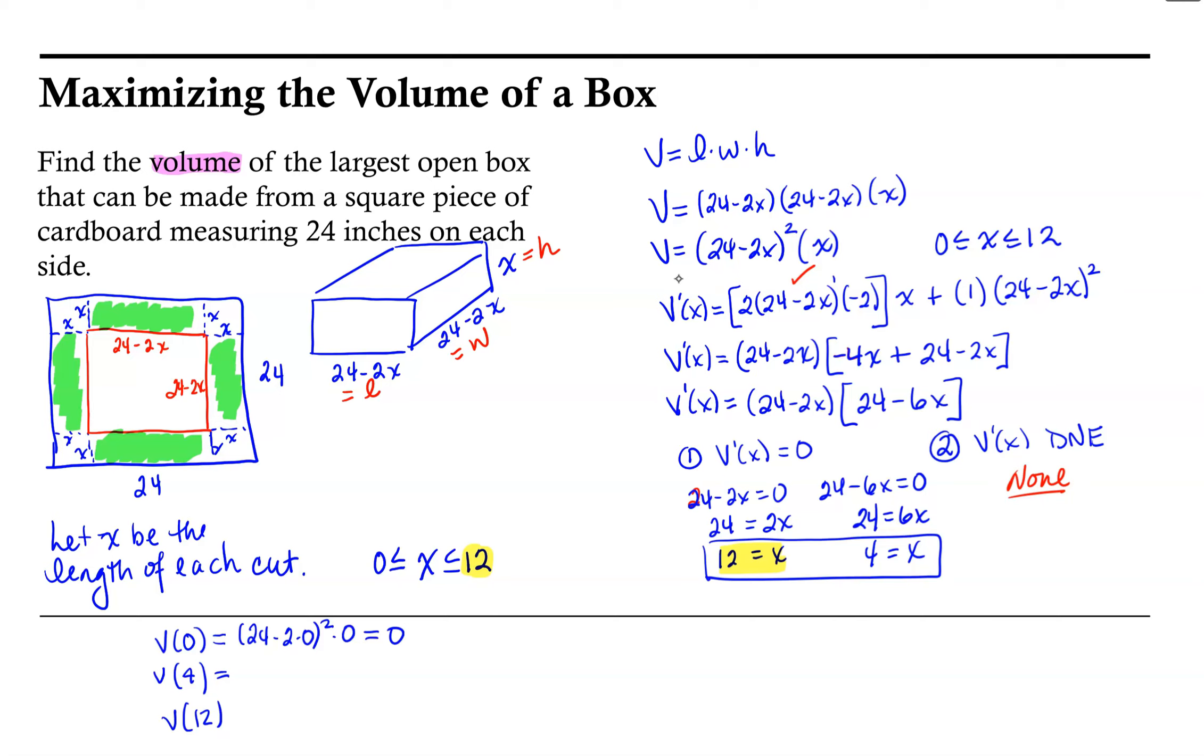Now our critical point when x is equal to 4, we would have 24 minus 2 times 4 squared times 4 as our volume. So inside the parentheses we would have 24 minus 8, which is 16. 16 squared would give us 256 times 4 would give us 1024.